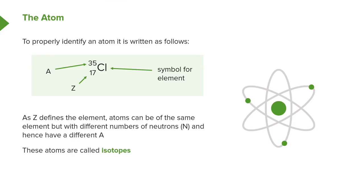Here we have an example of an atom. To properly identify it, it is written with the chemical symbol — Cl, which correlates to chlorine. As you will see in the periodic table, you will often see elements which don't make sense in English because they are derived from Latin or Greek. For example, Cl — chlorine — comes from the Greek 'chloros', meaning green. There are a number of other elements which also don't make sense in the context of their English or standard IUPAC names.